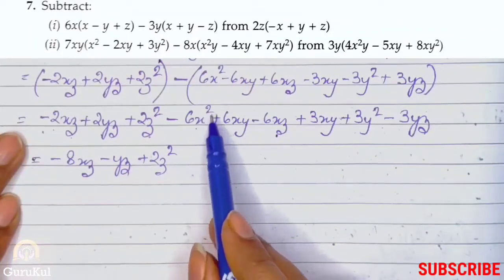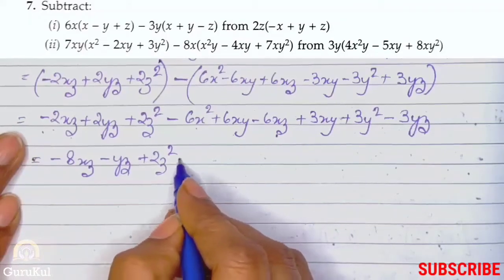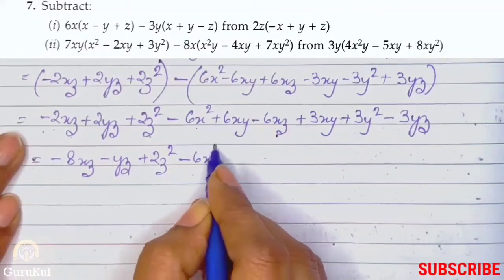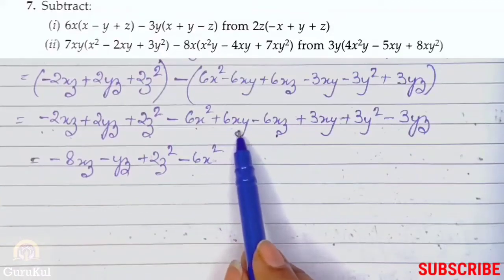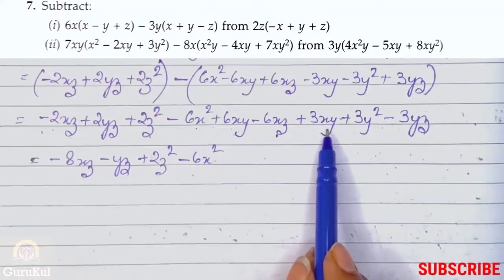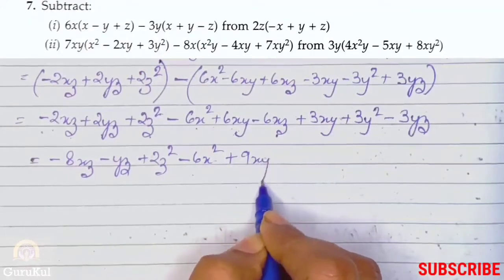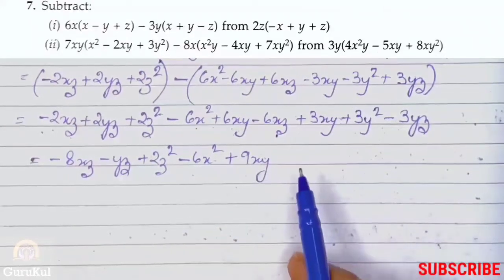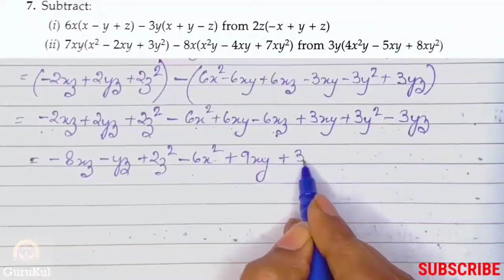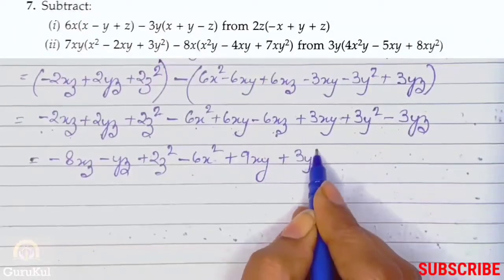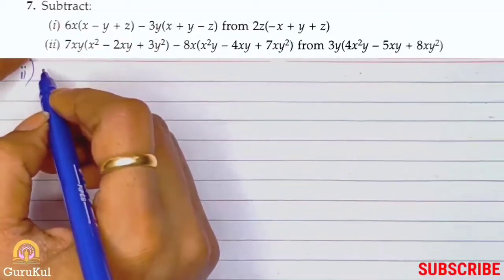Then x² — there is no other x² term: minus 6x². Then 6xy plus 3xy gives plus 9xy. And finally y² — that gives plus 3y². That completes the second part of sum number 7.